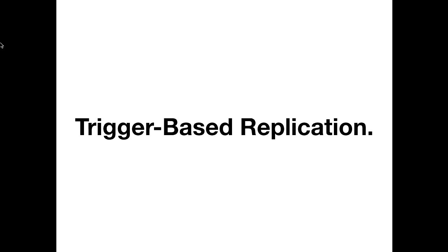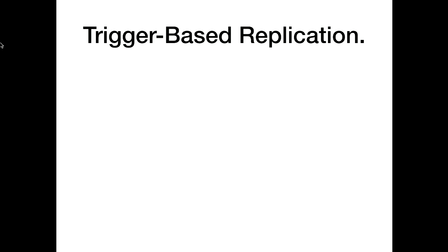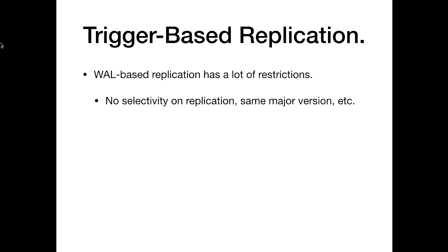Streaming replication had a lot of great things, but also a bunch of limitations. You still can't consolidate data, can't sub-select from it. So how do we solve this? The answer is trigger-based replication. There are a lot of restrictions: no selectivity, it has to be the same major version, so you can't use it for a version upgrade.